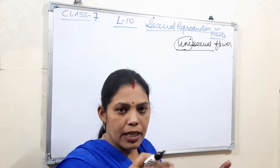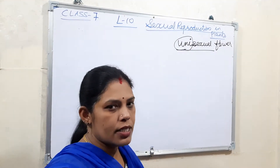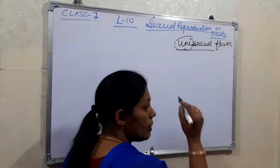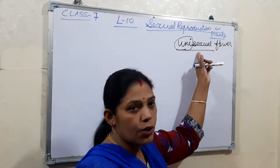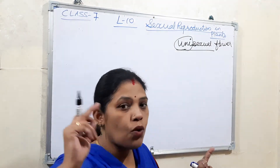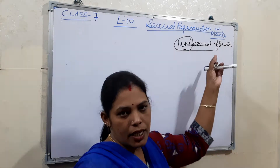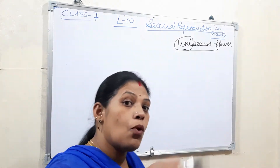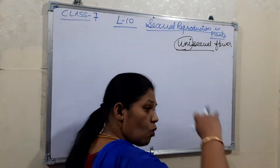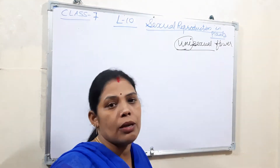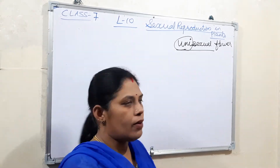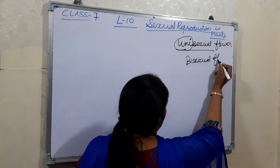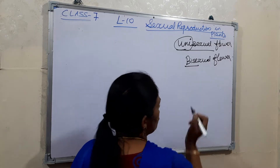In a unisexual flower, the plant must get the opposite sex from another flower. But in some plants, if there is only one kind of organ, it is a unisexual flower. And if in some plants there are both sex organs — both the male sex organ and the female sex organ present in the same flower — then it is known as a bisexual flower.